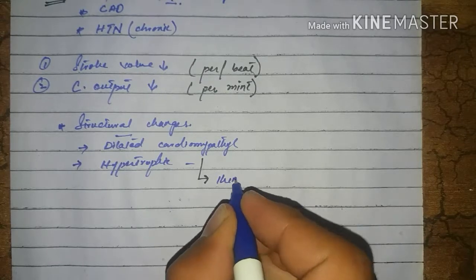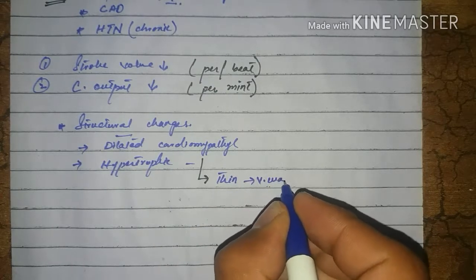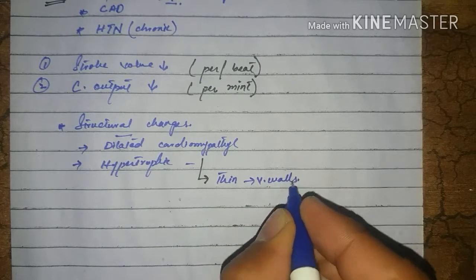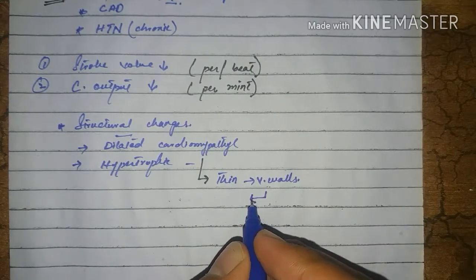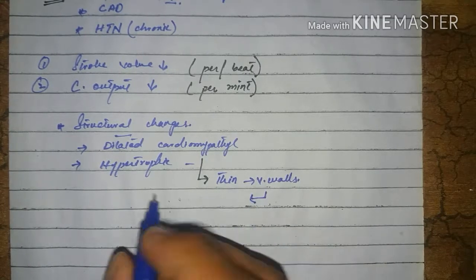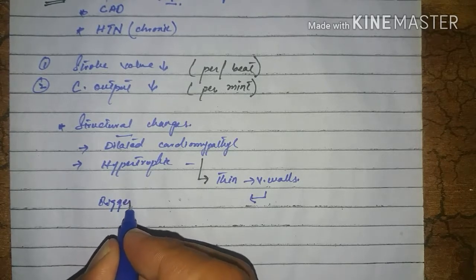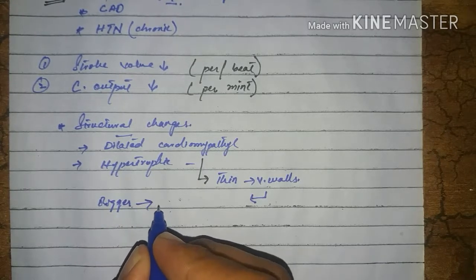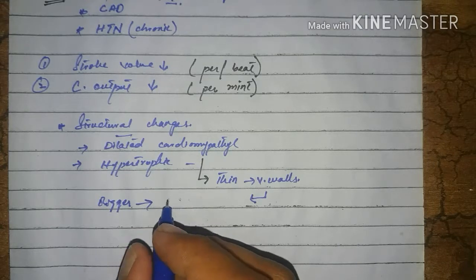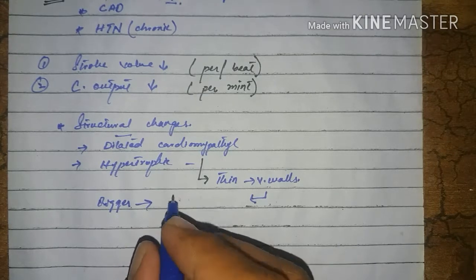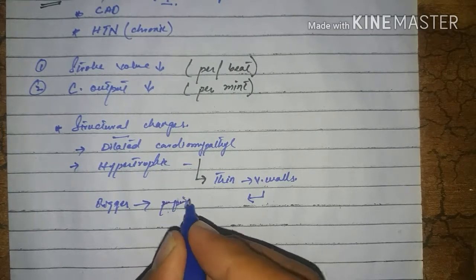In dilated cardiomyopathy, there is thinning of the ventricle walls, due to which there is a bigger space for the blood. But due to this thinning of the ventricle walls, the pumping ability of the heart decreases.